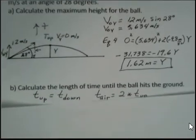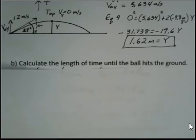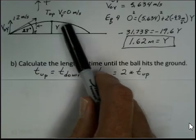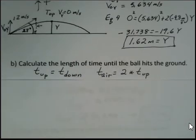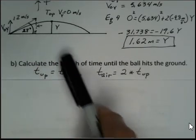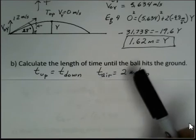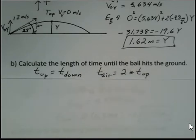How long is the ball in the air before it hits the ground? We're going to take advantage of the symmetry of the motion. The time to go up to the top equals the time to go down to the ground. We're landing on level ground, so no cliff type situation. Time up equals time down, and the time in the air equals two times the time to go up.